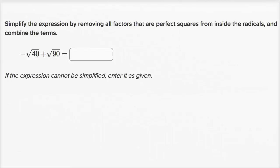Let's get some practice rewriting and simplifying radical expressions. So in this first exercise, and these are all from Khan Academy, it says simplify the expression by removing all factors that are perfect squares from inside the radicals and combine the terms. If the expression cannot be simplified, enter it as given. Let's see what we can do here.